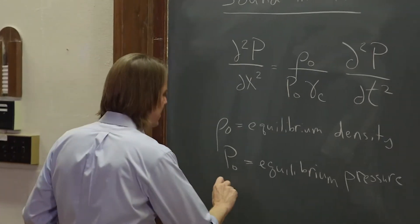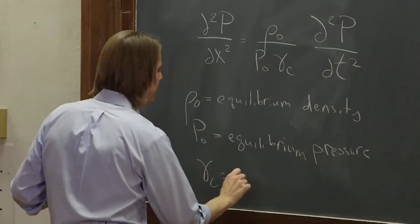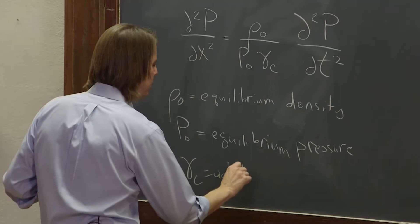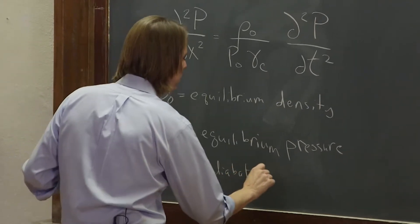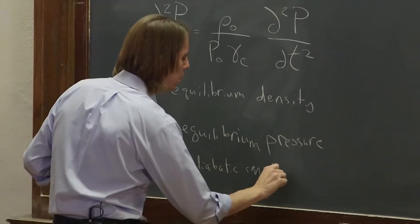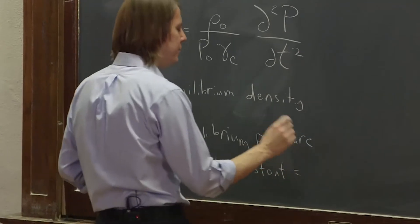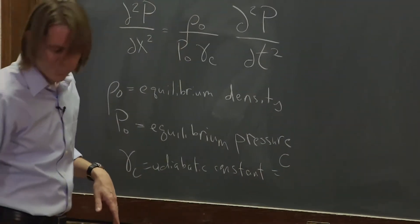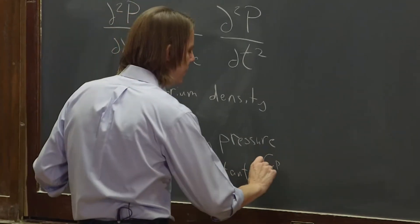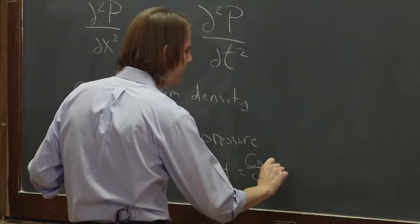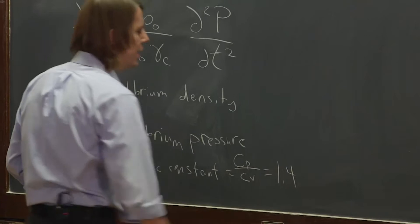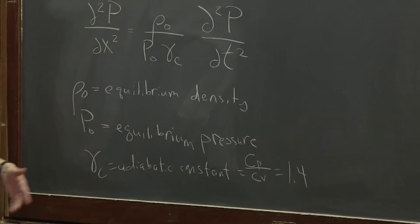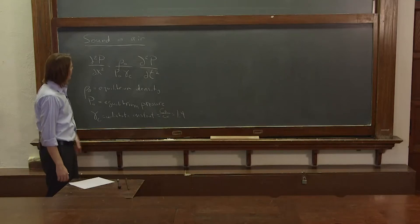And γc is known as the adiabatic constant. And it equals the specific heat of the gas at constant pressure over the specific heat at constant volume, like it upside down. And it's about 1.4. And it's just a constant that falls out from using ideal gas law and other properties of gases.